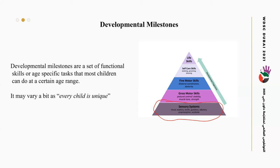Gross motor skills involve checking postural control, stability, muscle tone, and strength. Fine motor skills include bilateral coordination, eye-hand coordination, dexterity, and in-hand manipulation. Self-care skills include grooming, dressing, eating, and transporting. And by the end is life skills — to reach that, we need proper improvement in each developmental milestone.